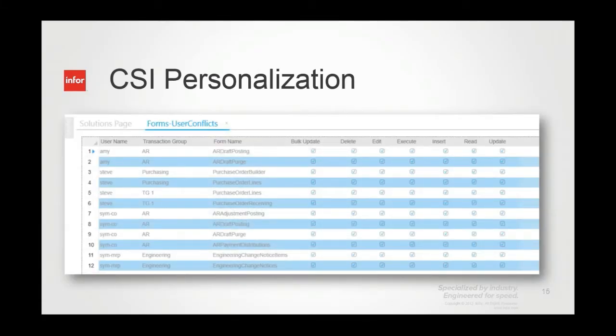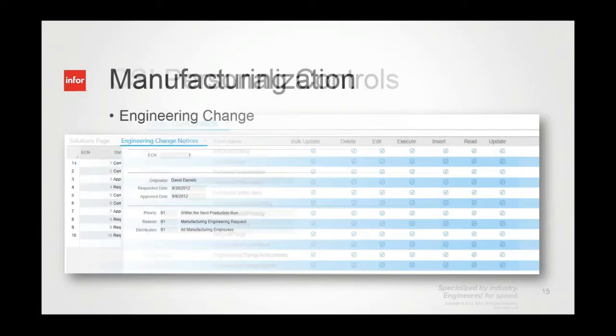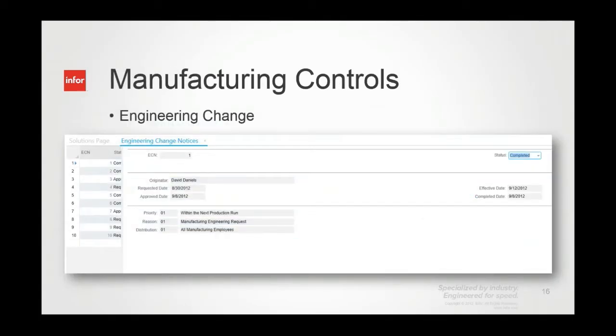We also created a form called 'User Conflicts' that walks the user table and looks at what users have conflicting roles based on the transaction group. For example, Amy happens to have the ability to do both a draft purge and a draft posting in the AR transaction group — that's a potential conflict. Now I can say, can I segregate those duties? Can I take one away from Amy? Or perhaps I need a compensating control to mitigate the risk. The key is that it's now visible — I didn't have to use a spreadsheet. These are simple personalizations done right inside SiteLine.